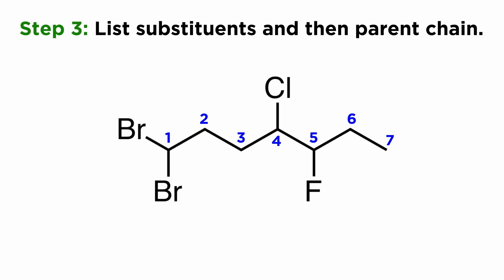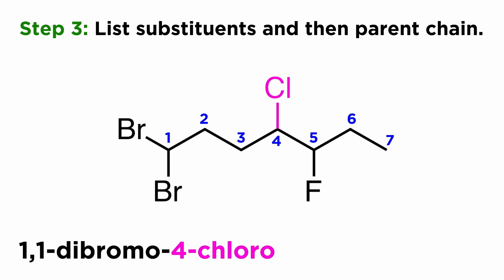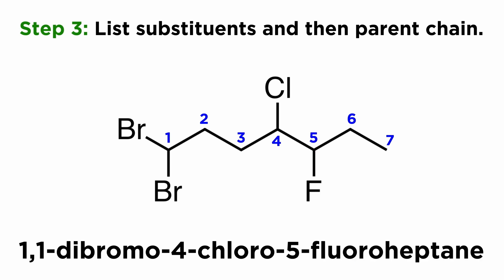Now it's time to list the substituents. Alphabetically, it's B for bromo first, so that will be 1,1-dibromo. Remember that we ignore the D in dibromo — it's still just B for bromo. Next is 4-chloro, since that starts with C. And last is 5-fluoro, as that's last alphabetically. That gives us 1,1-dibromo-4-chloro-5-fluoroheptane.